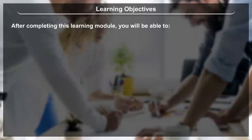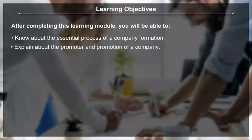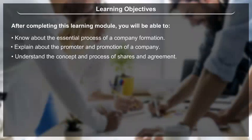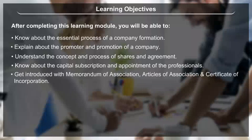Learning Objectives: After completing this learning module, you will be able to know about the essential process of company formation, explain about the promoter and promotion of a company, understand the concept and process of shares and agreements, know about capital subscription and appointment of professionals, and get introduced with Memorandum of Association, Articles of Association, and Certificate of Incorporation.